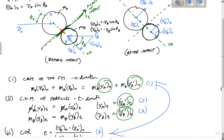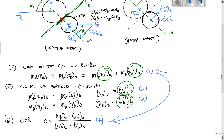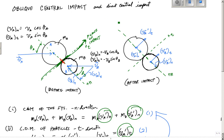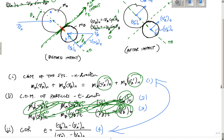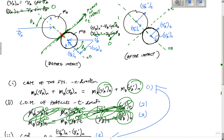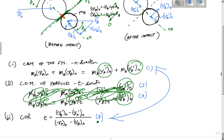Now, direct central impact is just a special case of this where theta-A and theta-B are both zero. When the angles are zero, the sine terms go to zero and the cosine terms go to one. That means the tangential components V-A-T and V-B-T are zero, making equations two and three useless. You're left with only conservation of momentum in the N direction and the coefficient of restitution equation — two equations, two unknowns. Ka-ching!